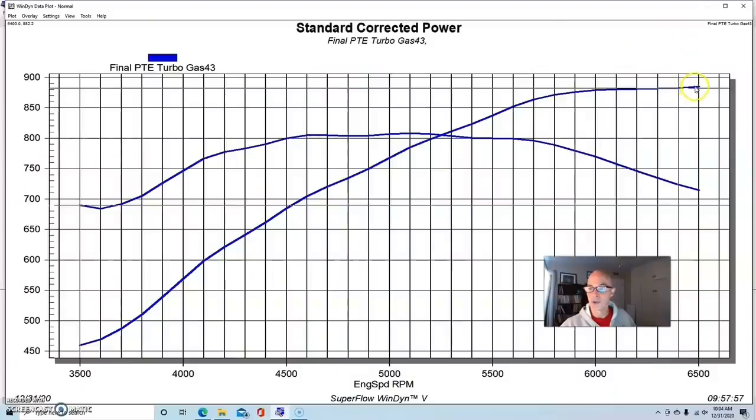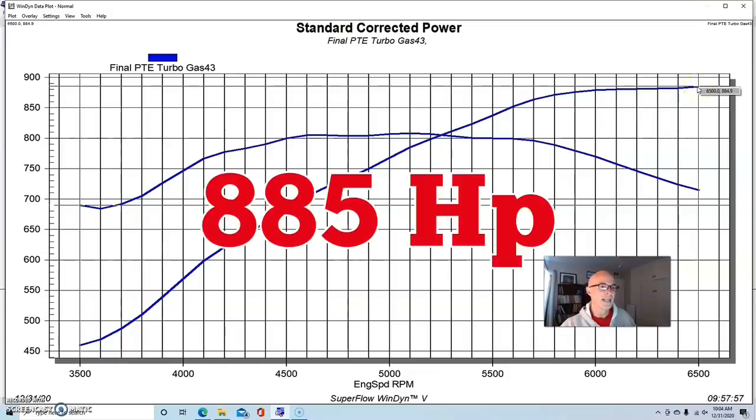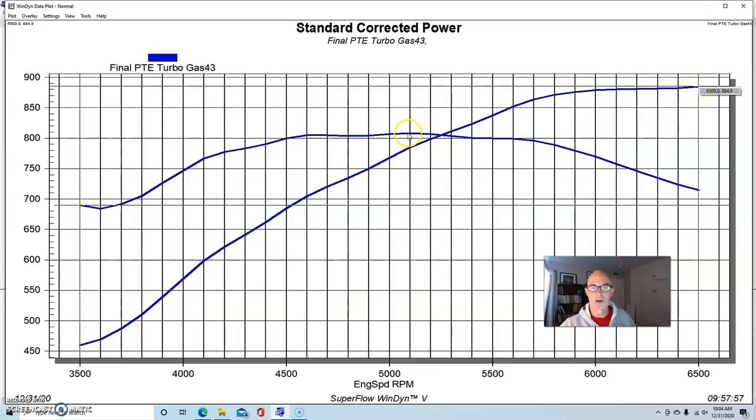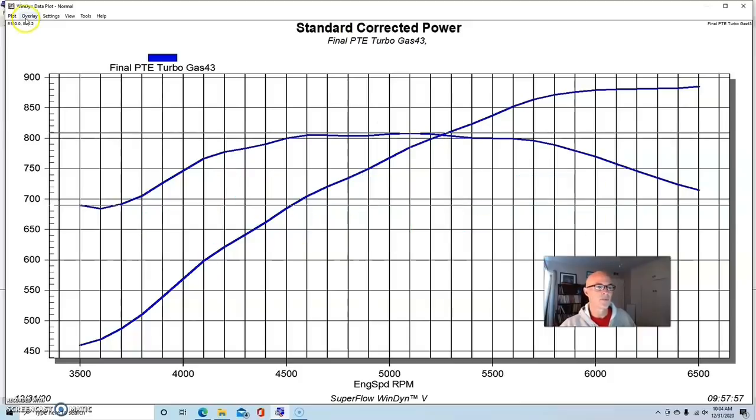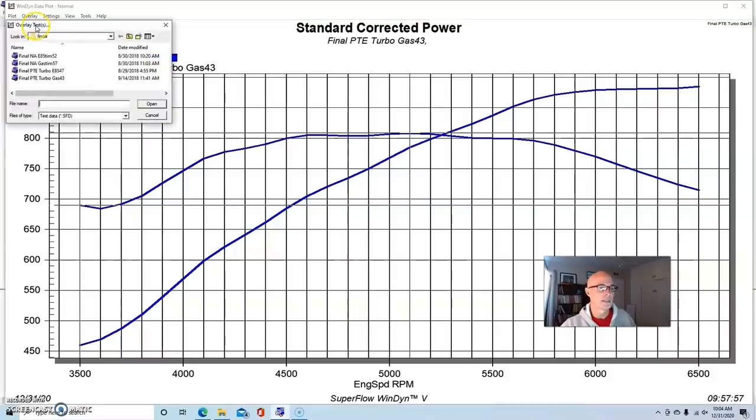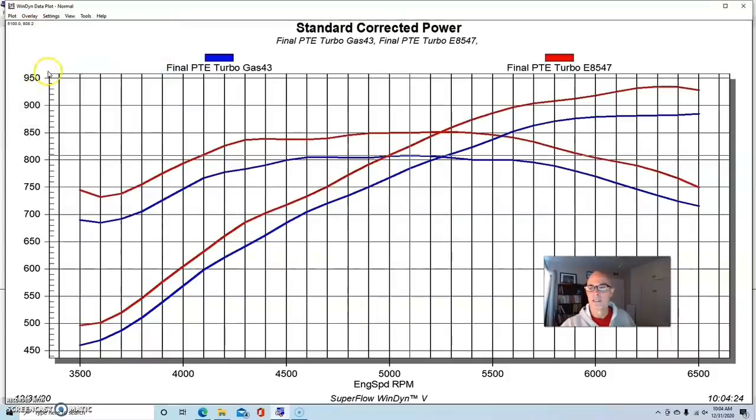Here is the power output of our turbocharged 6.0 liter running about 12.5 pounds with our 76mm Precision. This combination produced 885 horsepower and 808 foot-pounds of torque.